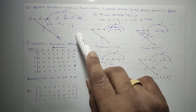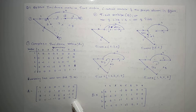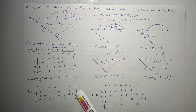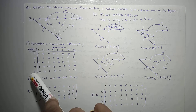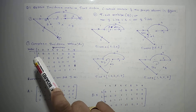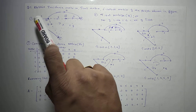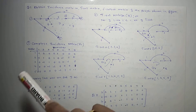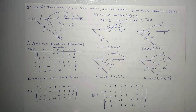Now we have to find the incidence matrix. First we will obtain the complete incidence matrix, and then the reduced incidence matrix. The complete incidence matrix is a matrix of branches versus nodes. This graph has 8 branches and 5 nodes.